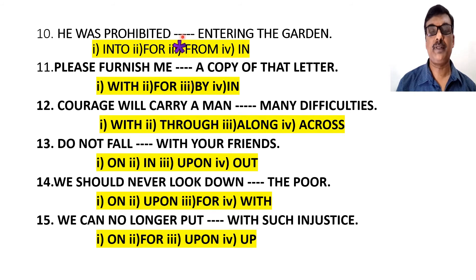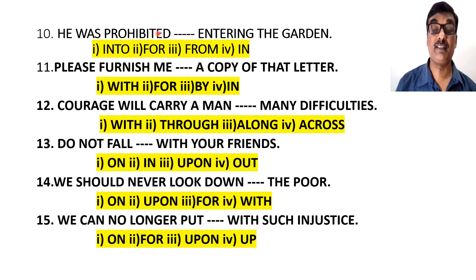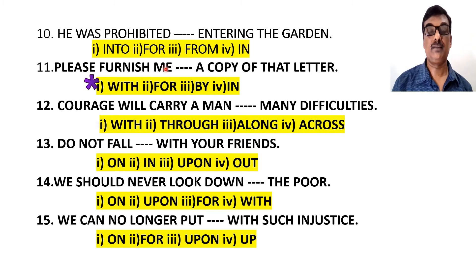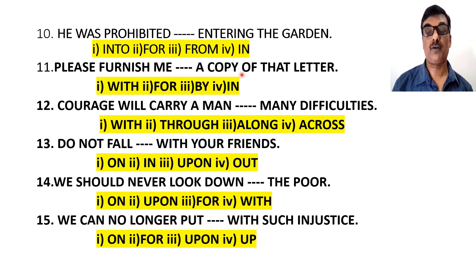Next: 'He was prohibited [blank] entering the premises.' After the word 'prohibited,' 'from' is always used — it's like a close and intimate friendship between these words. After 'prohibited from,' an '-ing' word is always used. Next: 'Please furnish me [blank] a copy of that letter.' The word 'furnish' takes 'with,' so: 'Please furnish me with a copy of that letter.'